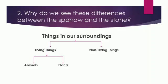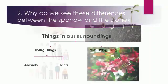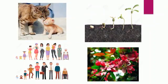Let us learn about the similarities between animals and plants. Animals give birth to babies; in the same way, seeds present in fruits and vegetables give rise to seedlings. Both animals and plants need food to grow. Kittens grow and become cats. Likewise, a human baby grows into a child and then into an adult. This happens in the case of plants too — a seedling grows into a plant.